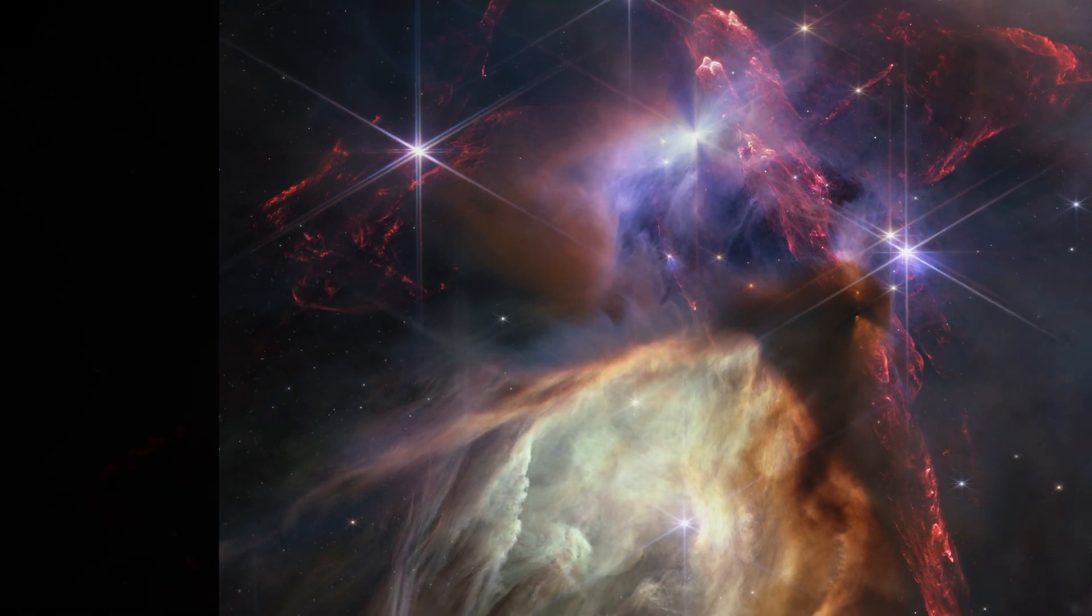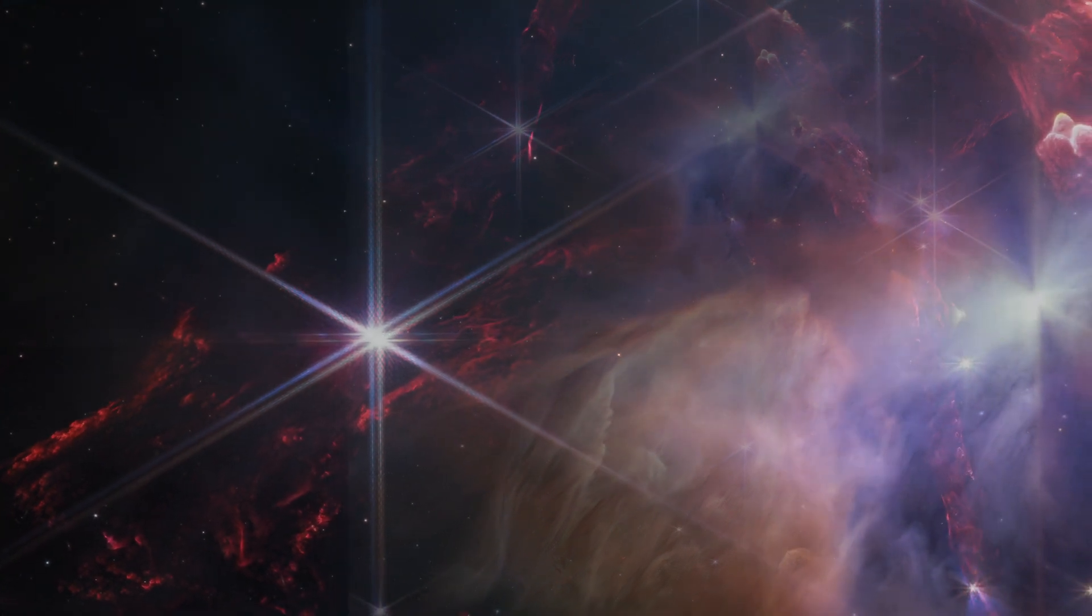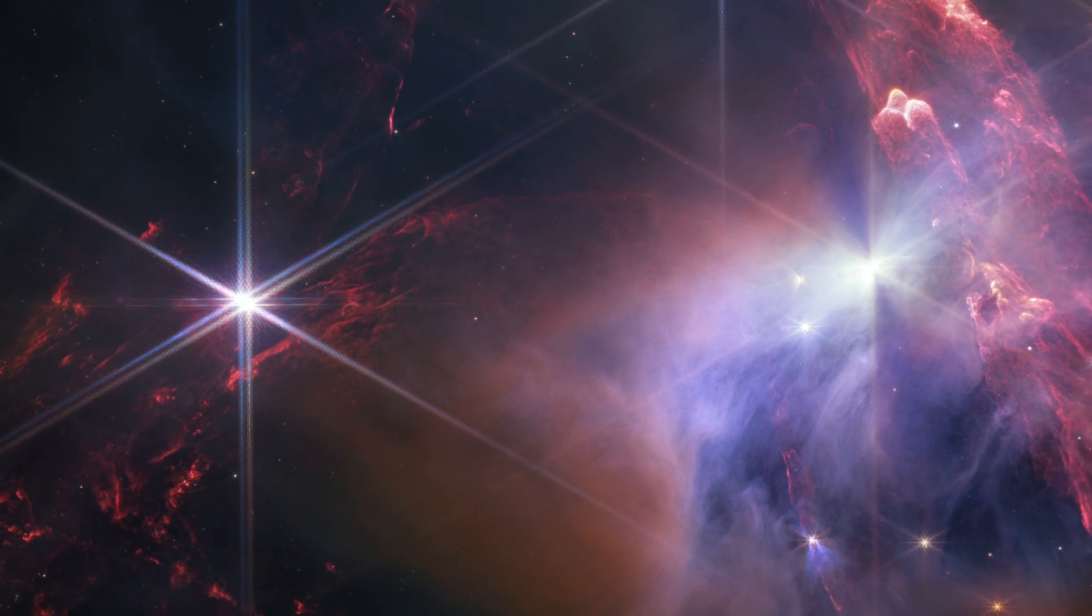A chaotic scene resembling explosions frozen in time, this new image from NASA's James Webb Space Telescope displays a field of about 50 young stars, many of them similar in mass to our Sun.